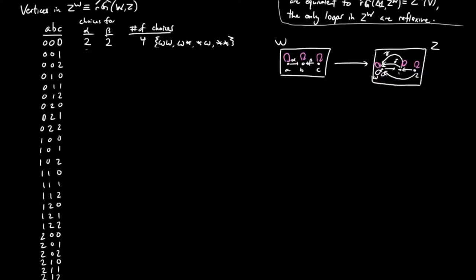To determine how many lifts each assignment gives us, we count how many assignments on arcs there are from alpha and beta to the arcs on Z. For example, when A, B, and C are all taken to 0, alpha and beta may each be mapped to either of the two loops at 0. Hence, there are four choices of lifts for this assignment.